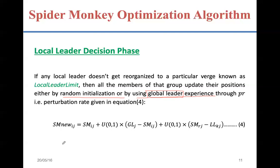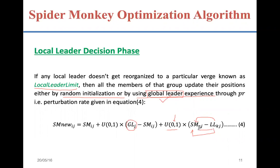The members of the stagnated group take help from the global leader. Instead of being influenced by the local leader as in the local leader phase, the members now get influenced by the global leader. The local leader gets attracted toward a randomly selected member, and this randomly selected member is always attractive. This is done to escape stagnation — to move the local leader out of the stagnated area toward the randomly selected member. Therefore the coefficient in this update equation is non-negative.